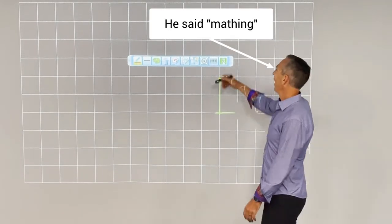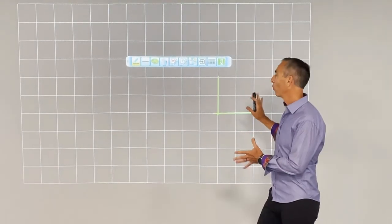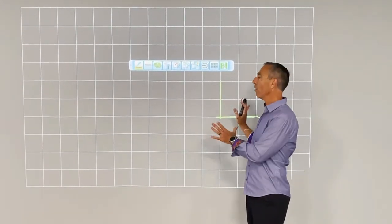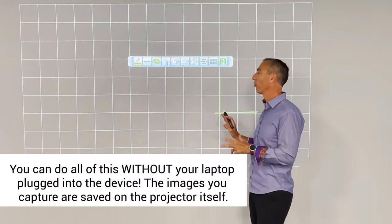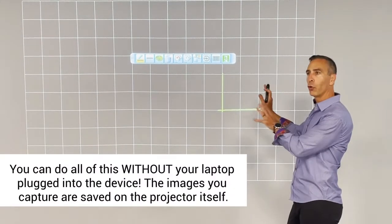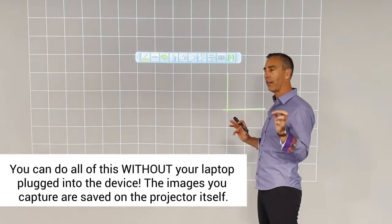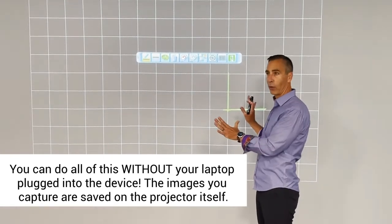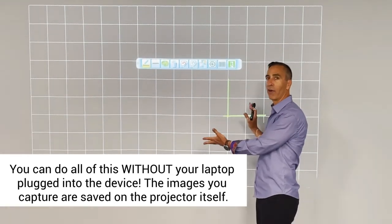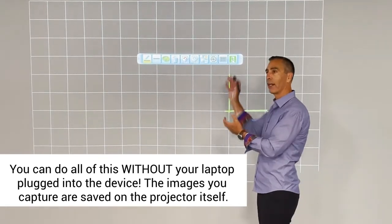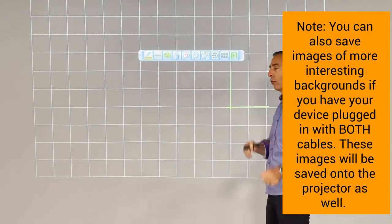And you want to keep it though. So one of the things you can do is if you're not plugged in with two cables, you can always take pictures of things you create on the board. If you're plugged in with two cables, I mean through USB and HDMI, you can capture the whole background. So let's say you had a letter chart you wanted to keep forever. You can take a picture of it and keep it on the machine and I'm going to show you how to do that.